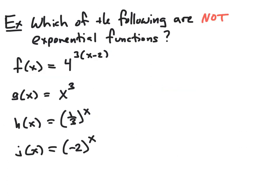In this example, we want to determine which of the following are not exponential functions. We have four functions: f, g, h, and j, all given by various rules. What we need to do is determine if they satisfy the definition, in the sense that each can be written in the form a times b to the x power.